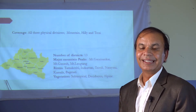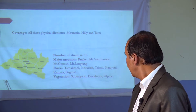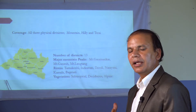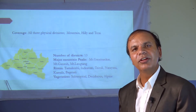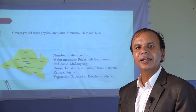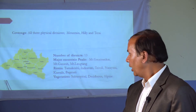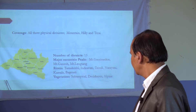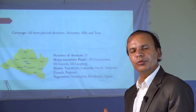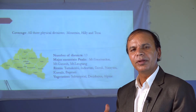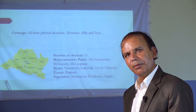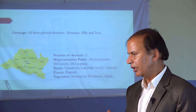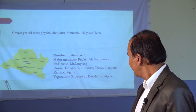Bagmati Province has an area of 20,300 square kilometers, which is 14 percent of the total land area of Nepal. Its population is 5,529,452, which is 20.8 percent of the total population of Nepal. Its administrative center and capital is Hetauda.